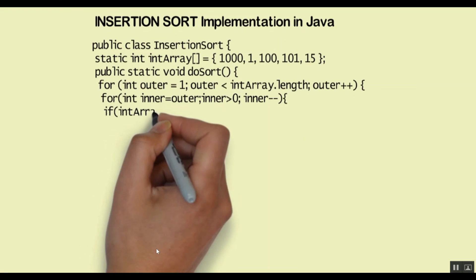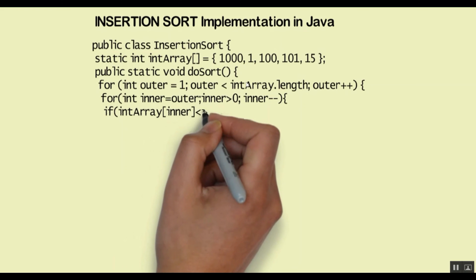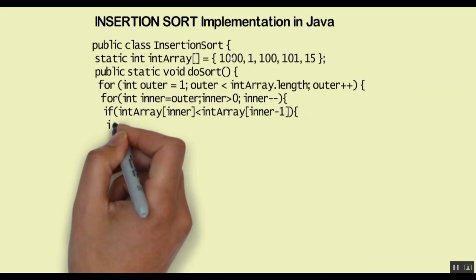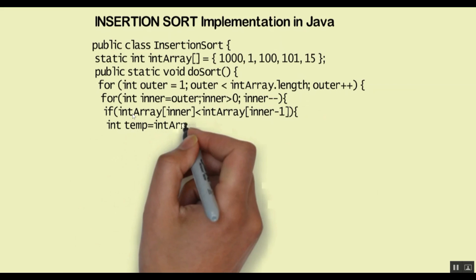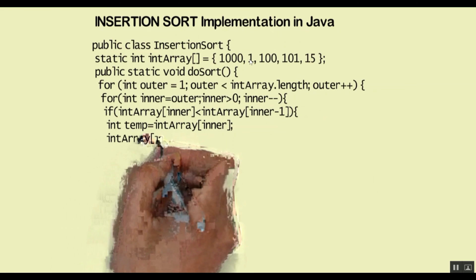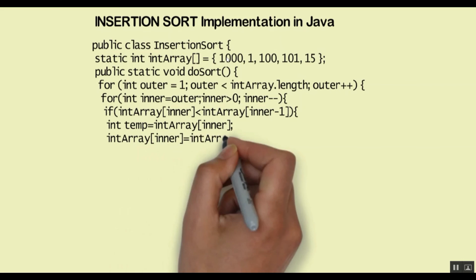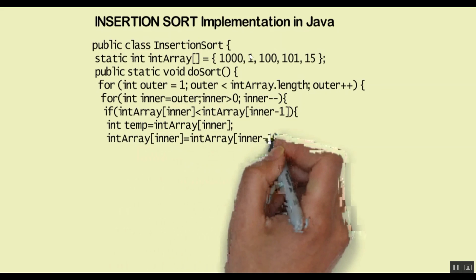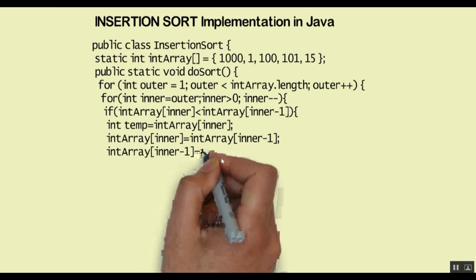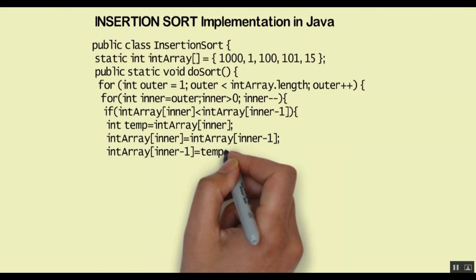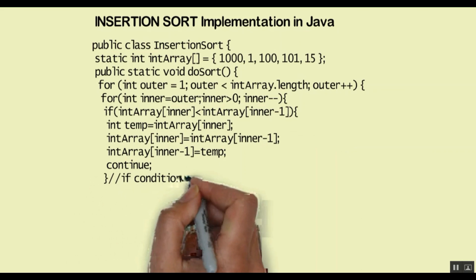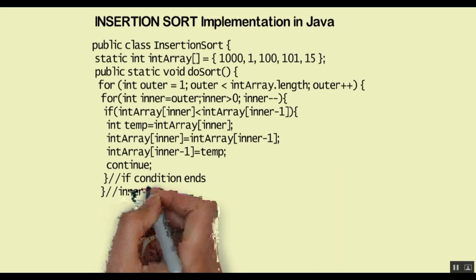Let's see how that swapping code works. In the first case when outer is 1, the element is picked up, compared to 1000, and it is less than 1000. So this if condition is satisfied and we swap 1 and 1000 — which has the same effect as moving 1000 towards the right and moving 1 towards the left, as shown in the animation. So our algorithm is a for loop for outer and a for loop inside for inner.